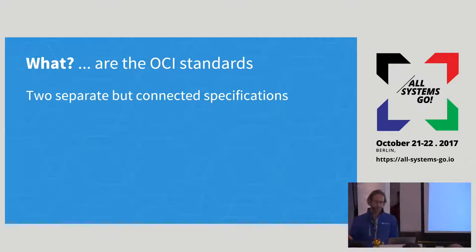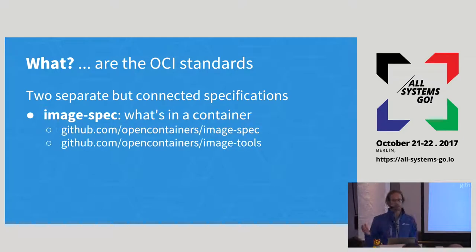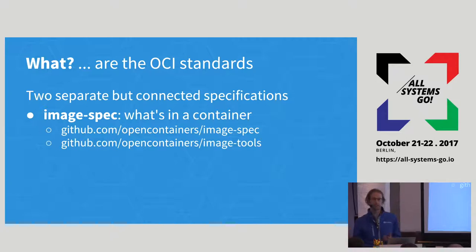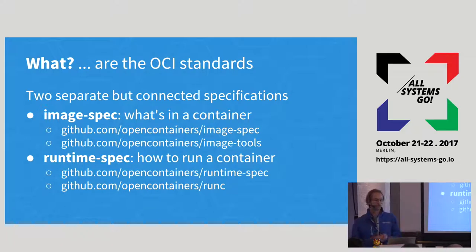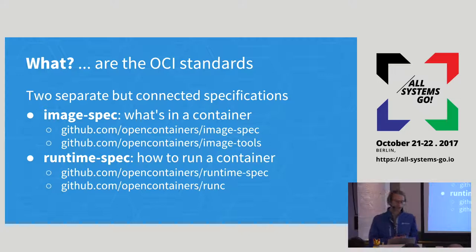There are two key projects within OCI. The first is what we call the image spec, which basically defines what's in a container. There are two main GitHub projects: the image specification itself and some associated tooling for working with these things. The other side is the runtime spec — what it means to run a container — and then there's runC, the reference implementation you might have heard of, which is used internally by things like Docker today.